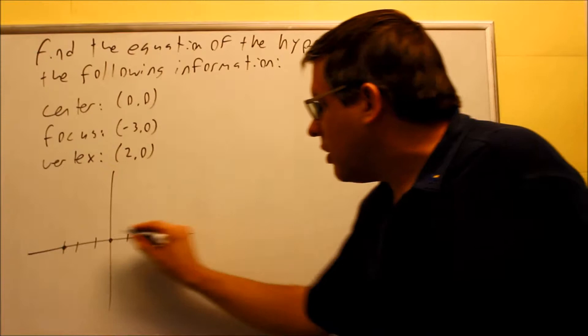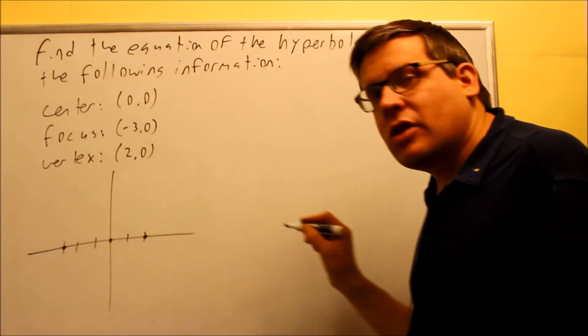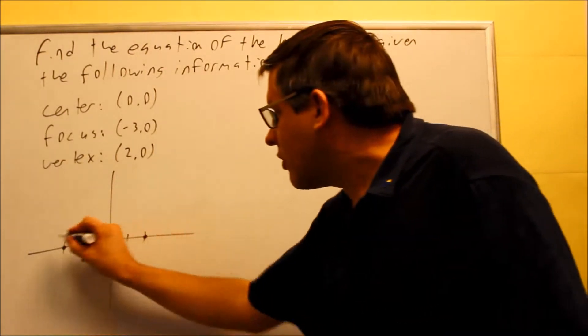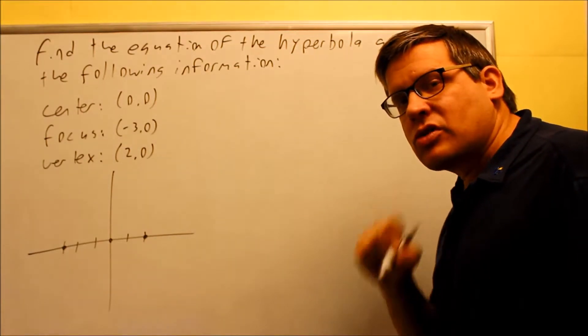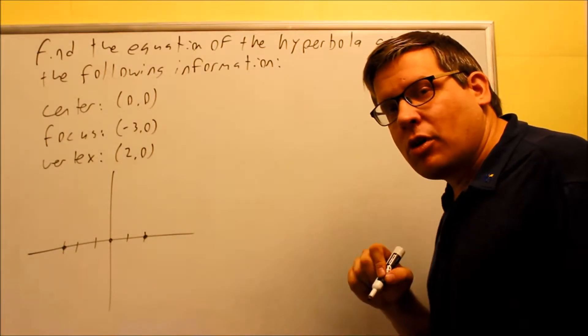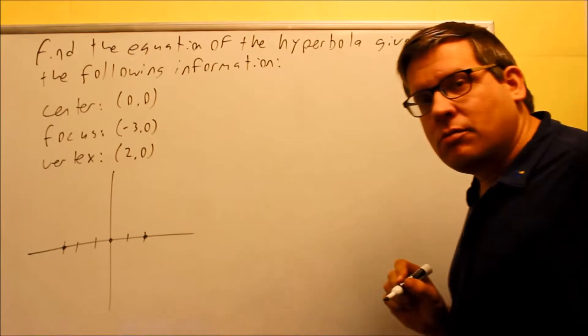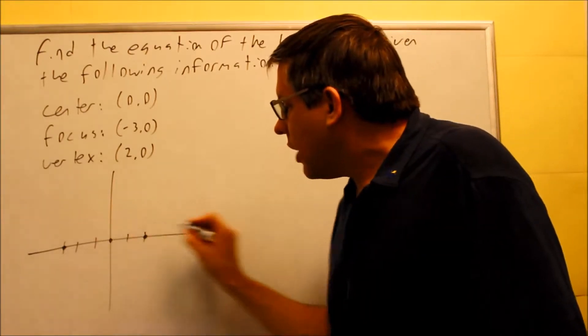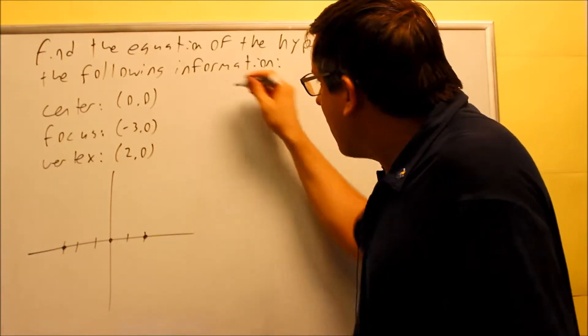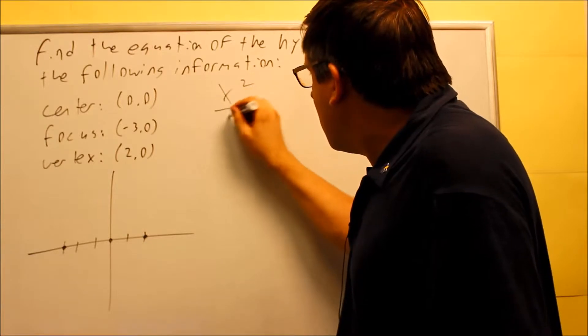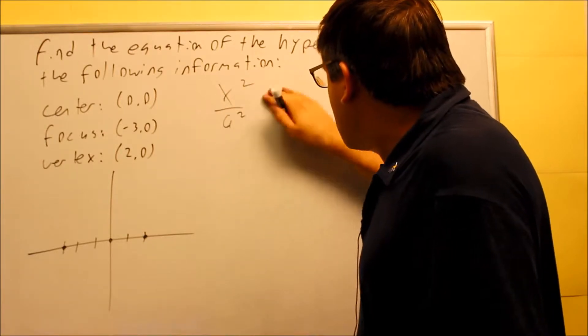Now what that tells me is it tells me that the hyperbola is going to have to open up left and right because everything we see here is all going horizontally. We want to start with the base formula for a hyperbola centered at (0,0) that opens to the left and to the right. That formula, if you look at the ones from the beginning of the notes section, that's going to be this one right here.